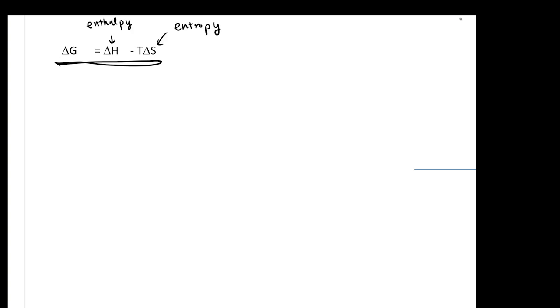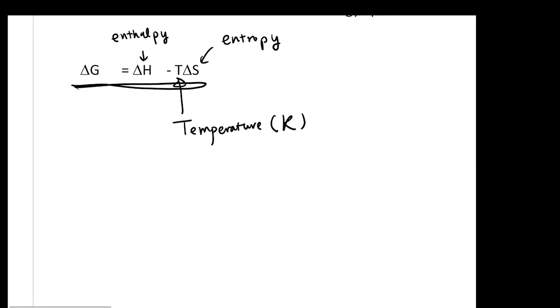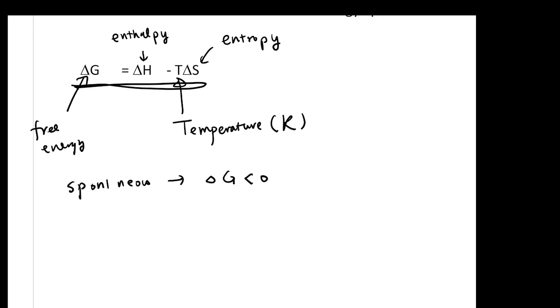The most important equation we want to understand is: ΔG = ΔH - TΔS. ΔH is enthalpy, ΔS is entropy, T is temperature in Kelvin, and ΔG is free energy. For a spontaneous process, ΔG needs to be negative.